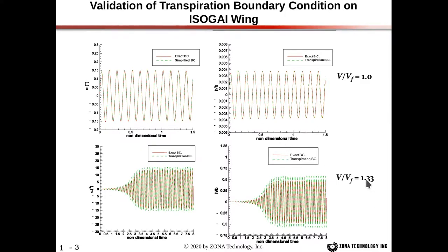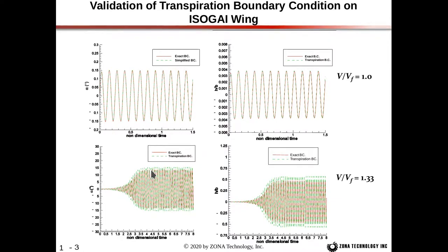When we move to 33% above the flutter speed, in the linear sense we would expect results to blow up to infinity. But since we include nonlinear effects through the CFD computation, we actually grow to a bounded oscillation — limit cycle oscillation. In the beginning, you can see the instability developing with the exact and transpiration boundary conditions giving the same result: frequency matches, amplitude matches. Once we develop the full LCO of about 12 to 15 degrees, the exact boundary condition gives roughly plus or minus 13 degrees, while the transpiration boundary condition gives about plus or minus 15 degrees — so it over-predicts amplitude, but the frequency is spot on.